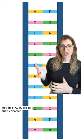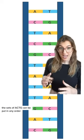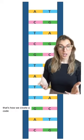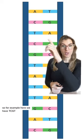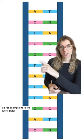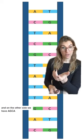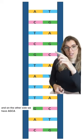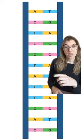The sets of A, C, T, and G can be put in any order — that's how we create a code. So, for example, here we have T, C, G, and T, and on the other side we have A, G, C, and A.